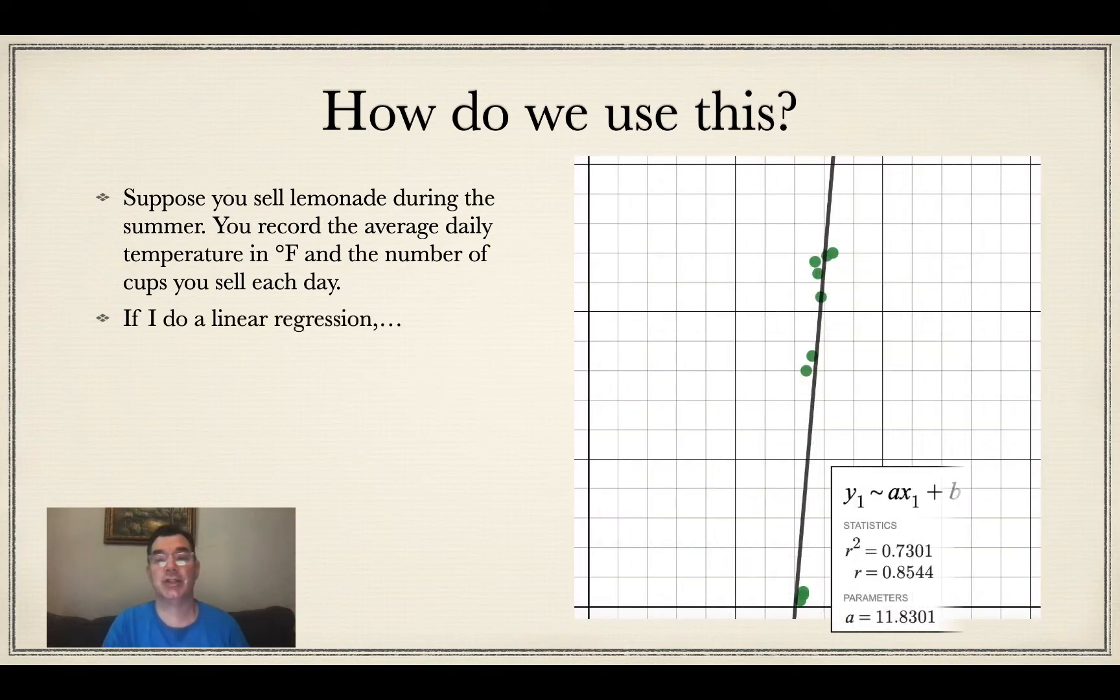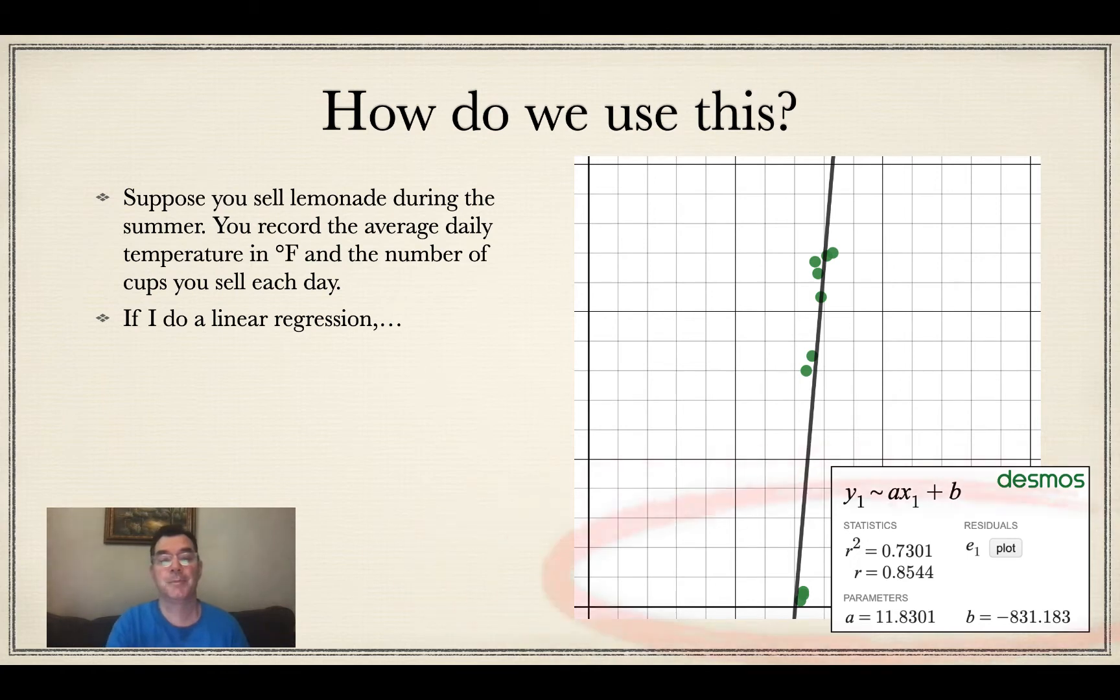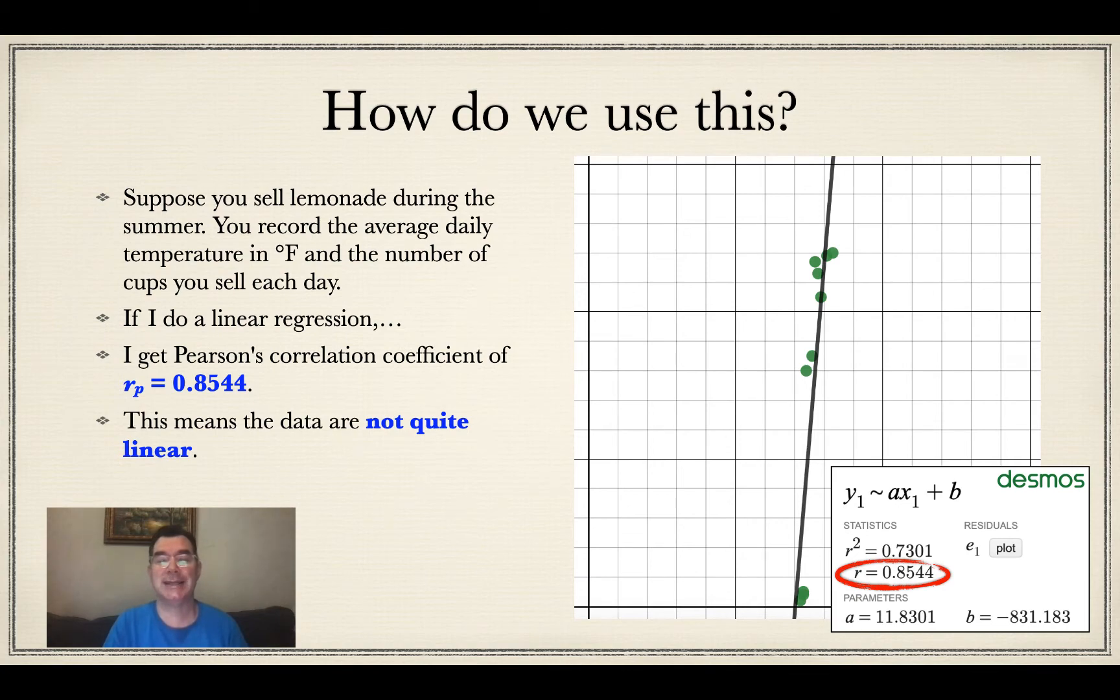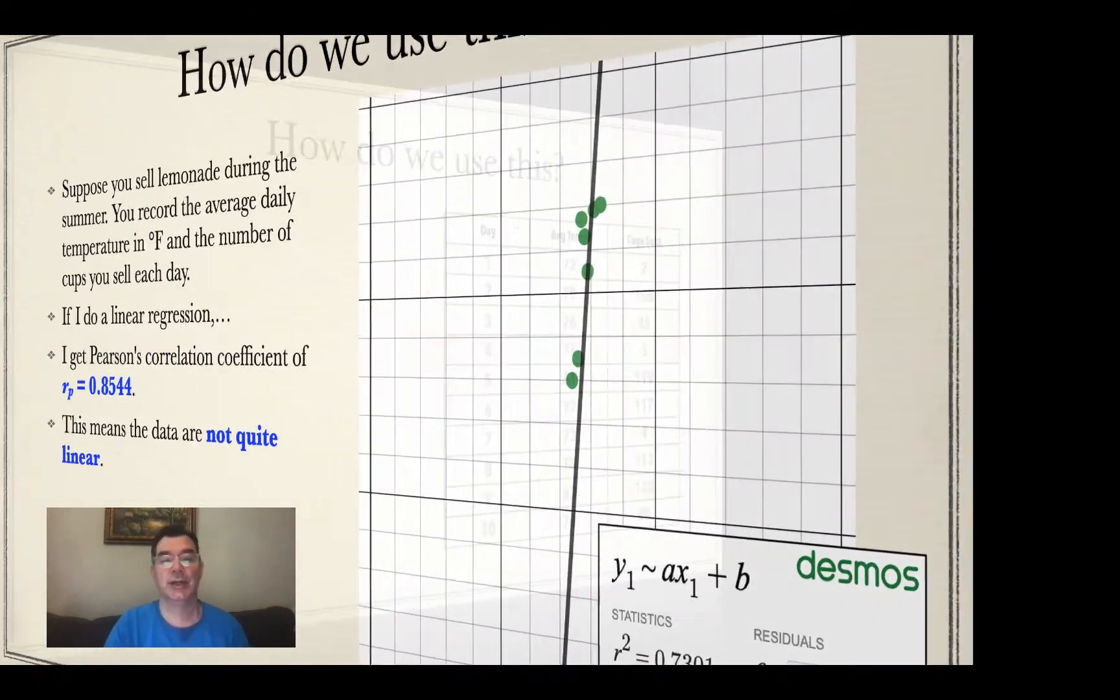And so if I do a linear regression, there is the set of points and the line that runs through it. And so what I notice is my Pearson's correlation coefficient is 0.8544. What does that mean? It means that the data are not quite linear. It's not really strong enough for me to call it a linear relationship.